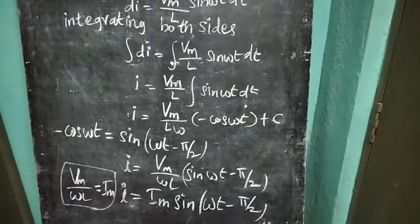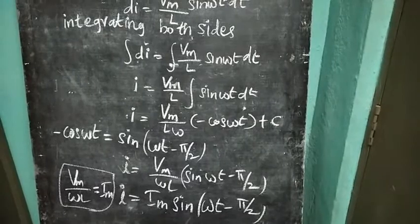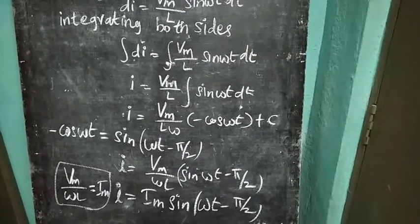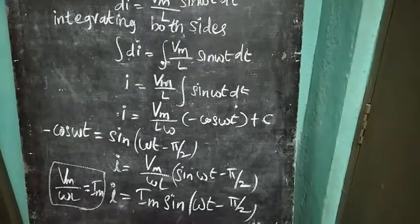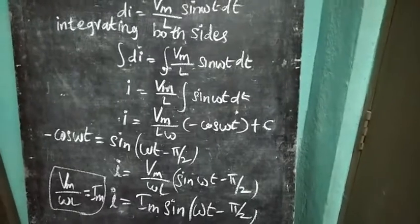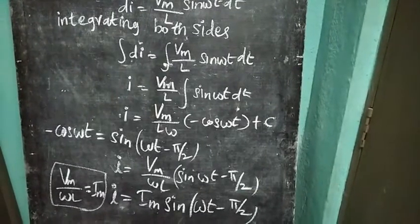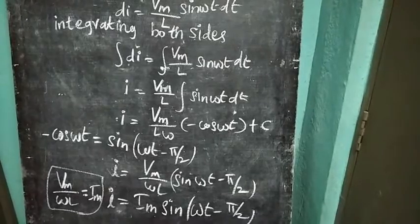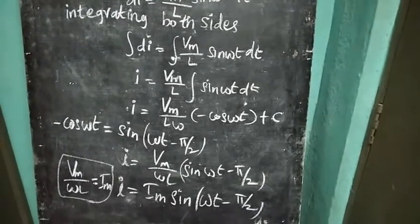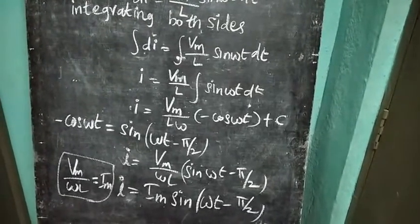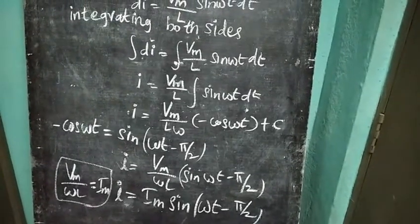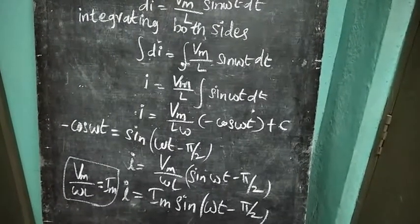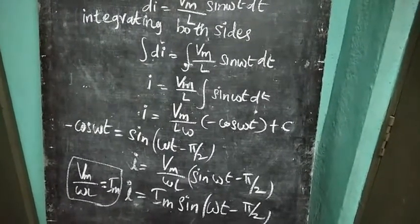Here, Vm by omega L is equal to Im, that is the peak current. So I is equal to Im sin of omega t minus pi by 2. From the inductive circuit, the current I lags behind the applied voltage by pi by 2 in the circuit.